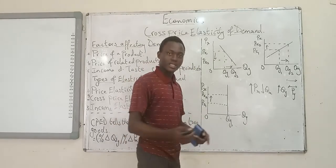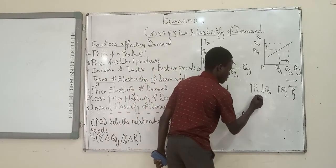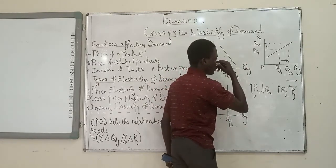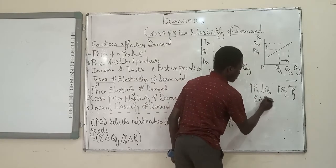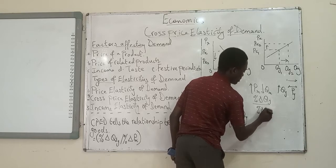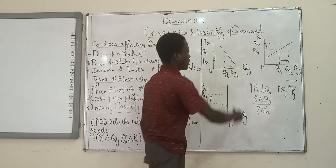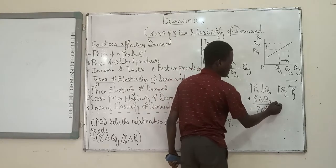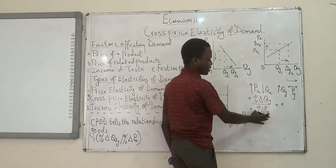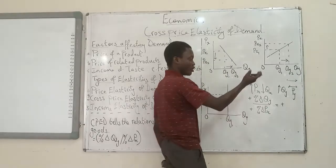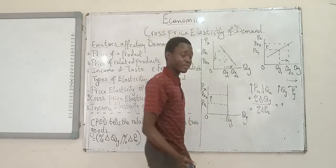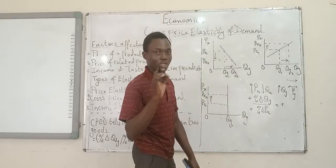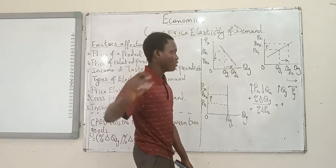What sign is the cross price elasticity going to have for substitutes? The percentage change in quantity of Y divided by the percentage change in price of X: the price increased — that is a positive change — and the quantity of the other commodity also increases — which is also a positive change. Plus divided by plus gives us a positive answer. So if the goods are substitutes, the cross price elasticity is going to be positive.